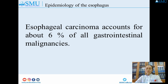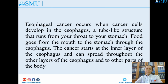Esophageal carcinoma accounts for about 6% of all gastrointestinal malignancies. Esophageal cancer occurs when cancer cells develop in the esophagus, a tube-like structure that runs from your throat to your stomach. Food goes from the mouth to the stomach through the esophagus. The cancer starts at the inner layer of the esophagus and can spread throughout the other layers and to other parts of the body.